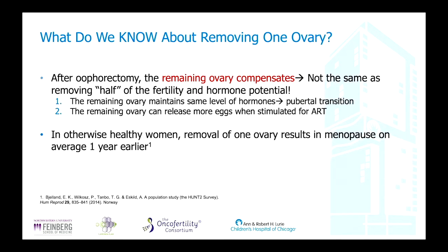What do we know about removing one ovary? After an oophorectomy the remaining ovary compensates — it is not the same thing as removing half of the fertility or hormone potential. The remaining ovary can maintain the same levels of serum hormones and support transition through puberty, and can release more eggs when stimulated for assisted reproductive technologies. There has been a publication from Norway showing that otherwise healthy women who had an oophorectomy for a non-oncologic reason went through menopause on average about one year earlier.